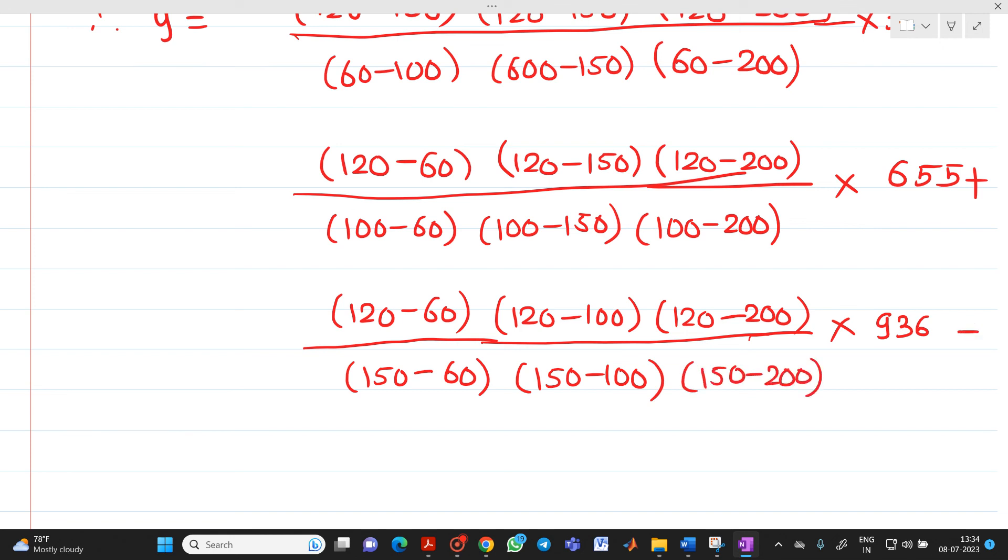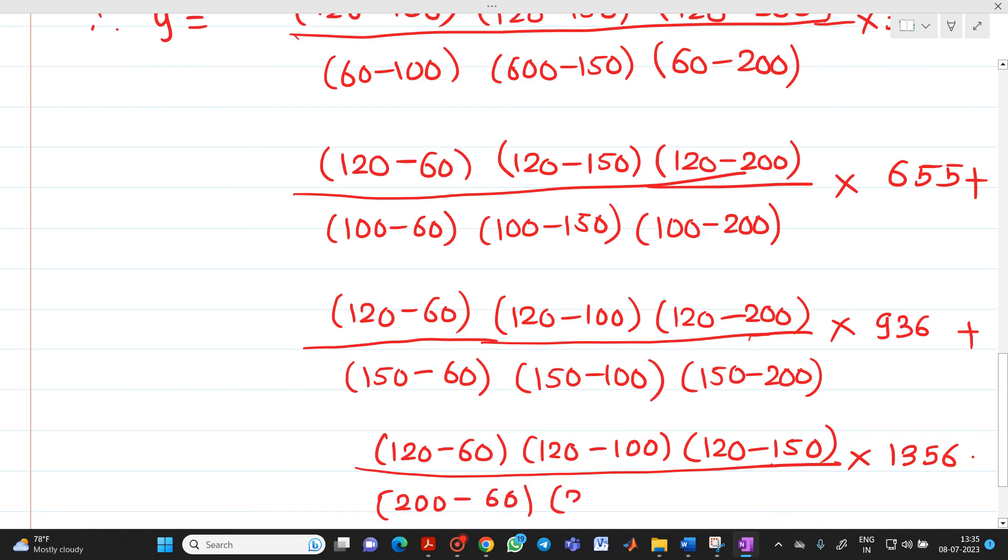And last we have to substitute here, 120 minus 60, 120 minus 100, 120 minus 150 into 1356 which will be your Y3. And here, 200 minus 60, 200 minus 100, 200 minus 150.